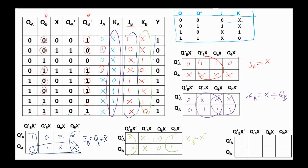And Y equals 1 on minterms 0, 4, 5, and 7 with the remaining entries being zero. So Y equals not QB · not X, or X · QA.